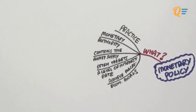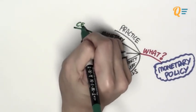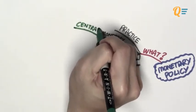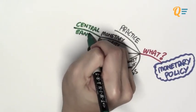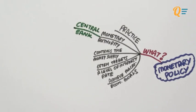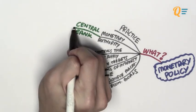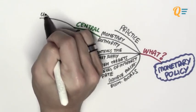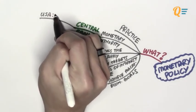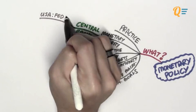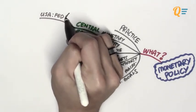Let's break things down so they'll be easier to understand. The monetary authority refers to the central bank in a particular country. The central bank is the bank of all banks — the mother of all banks. In the USA, the central bank is known as the Federal Reserve.